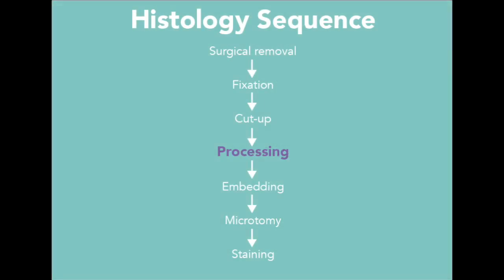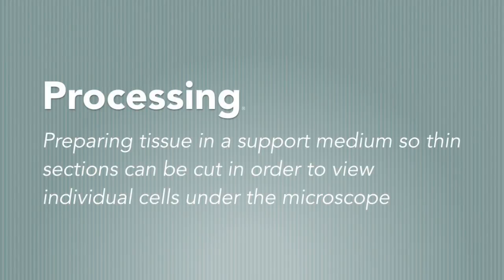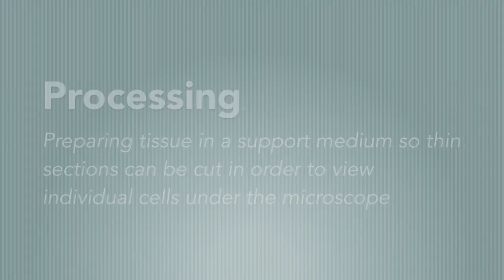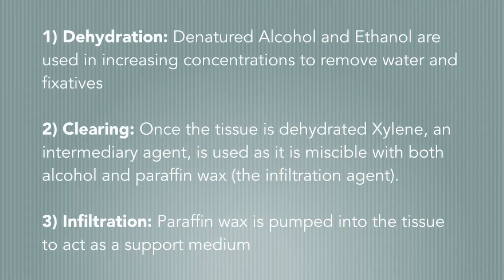This brings us to the next step in the sequence: processing. The aim of processing is to prepare your tissue in a support medium such as paraffin wax, so that very thin sections can be cut in order to observe individual cells under the microscope. The three main principles of processing are dehydration, clearing, and infiltration. During dehydration, denatured alcohol and ethanol are used in increasing concentrations to remove water and fixatives. Once the tissue is dehydrated, xylene, an intermediary agent, is used to clear the tissue, as it is miscible with both alcohol and paraffin wax.